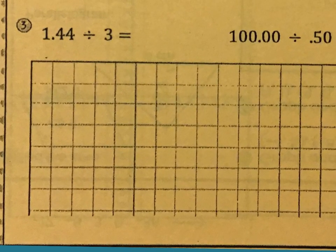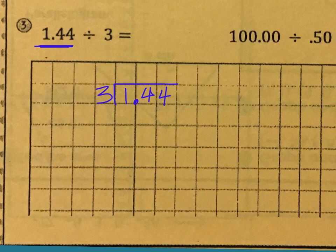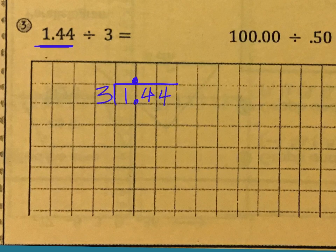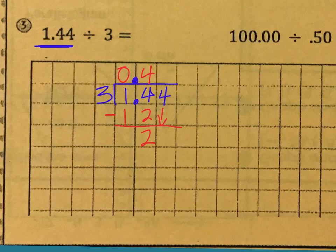The next problem has us dividing decimals. We have 1 and 44 hundredths being divided by 3. The first number goes underneath the division symbol, and 3 is the divisor. There are no decimals to move, so we move it straight up. 3 does not go into 1 — put a zero. 3 goes into 14 four times, giving us 12. Subtract, we get 2. Bring down the 4. 3 goes into 24 eight times. So the answer is 48 hundredths.